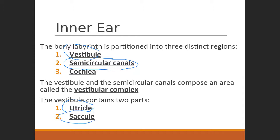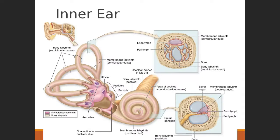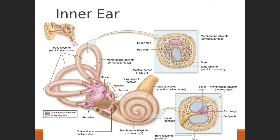The semicircular canals — each ear has a trio of them, each oriented in a different three-dimensional plane — house receptors for dynamic head movement. Our vestibule is a larger chambered structure made up of the utricle and saccule, and it houses three-dimensional awareness of position relative to gravity.